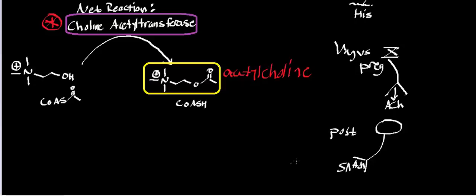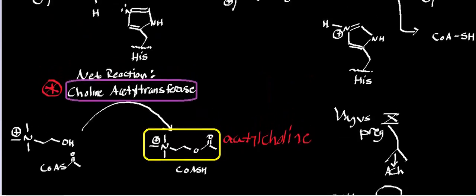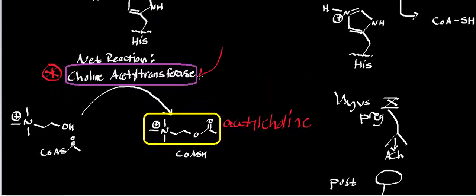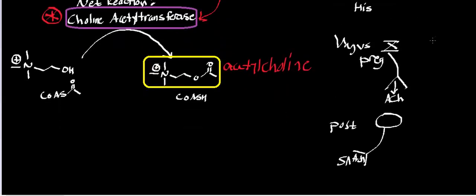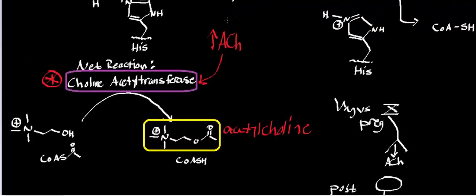Acetylcholine itself is a neurotransmitter. When you say you're a cholinergic neuron, what you mean is you express high concentrations of this enzyme, choline acetyltransferase, and so you're synthesizing a large amount of acetylcholine. Preganglionic parasympathetic neurons are cholinergic. Postganglionic neurons in the parasympathetic nervous system are also cholinergic. You also have some postganglionic sympathetic neurons that are cholinergic if they're innervating things like sweat glands, and cholinergic neurons that innervate muscles as part of the somatic nervous system, and cholinergic neurons within the brain.